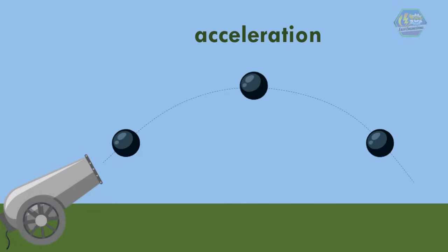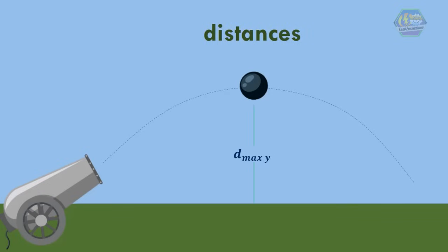Lastly, for distances, there are only two distances which we should give attention. These are the maximum height when the cannonball's velocity along y direction is zero, and the distance traveled of the cannonball during its flight.